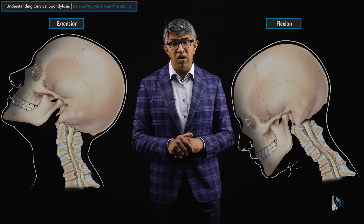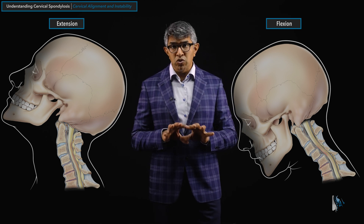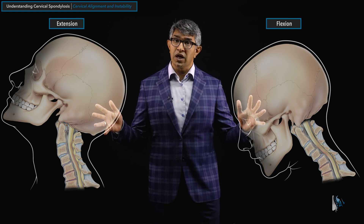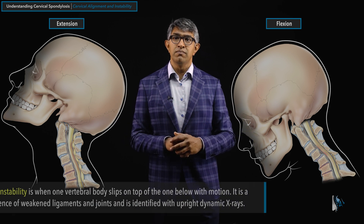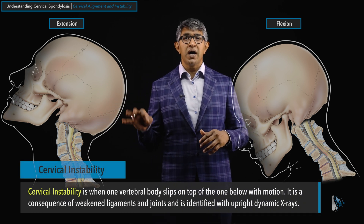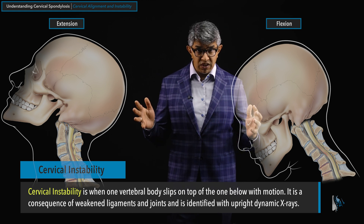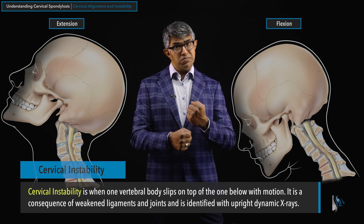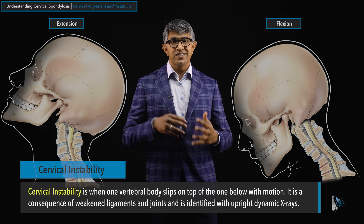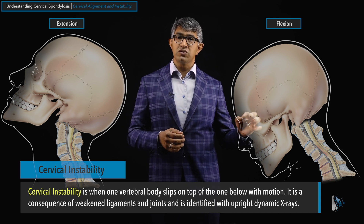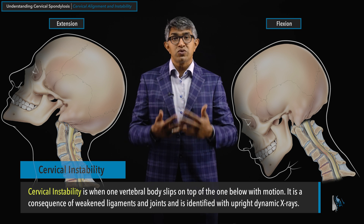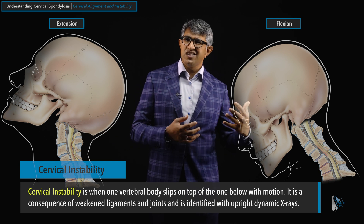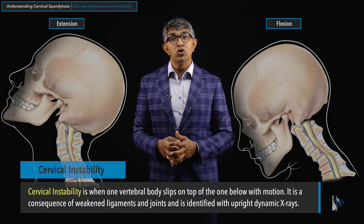Thankfully, cervical instability is not something we see that often, but we get flexion-extension x-rays on most patients we evaluate. When I evaluate patients for cervical pathology, I get those as a matter of routine to understand their alignment and to look for instability. Cervical instability is when one vertebral body slips on top of the one below with motion — with leaning forward and leaning back. It's usually a consequence of the ligaments being weak and a bit lax, permitting too much motion, and typically there's some joint arthritis that goes with it.